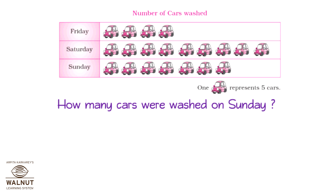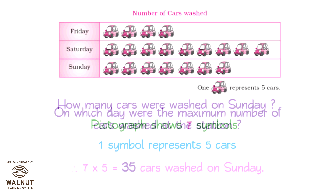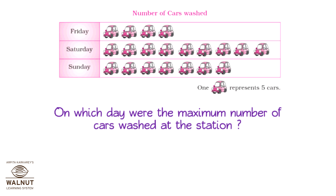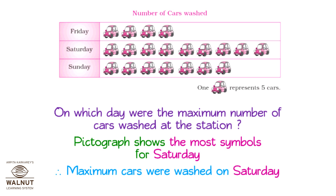How many cars were washed on Sunday? The pictograph shows seven symbols, and one symbol represents five cars, so seven into five is equal to thirty-five cars washed on Sunday. On which day were the maximum number of cars washed? The pictograph shows the most symbols for Saturday, therefore maximum cars were washed on Saturday.